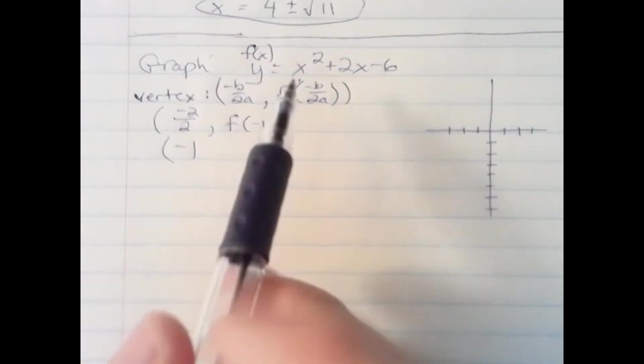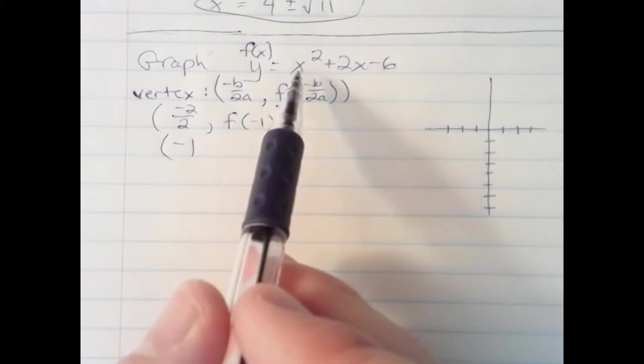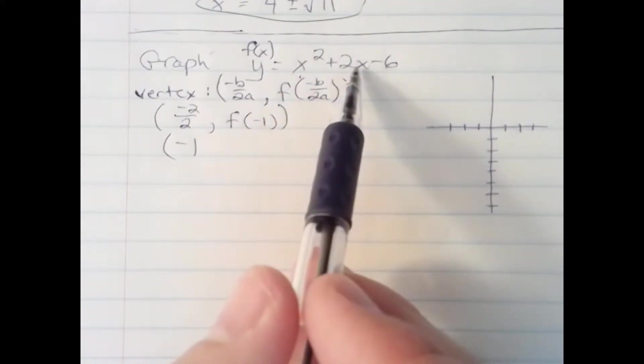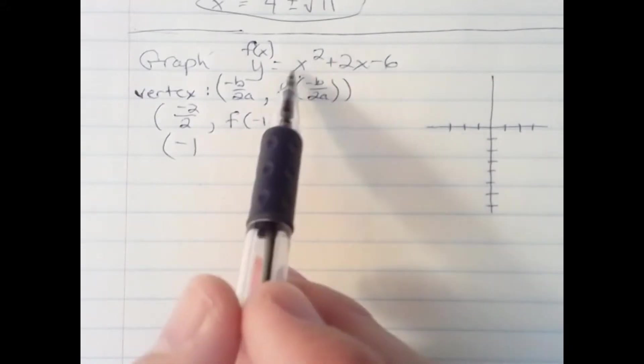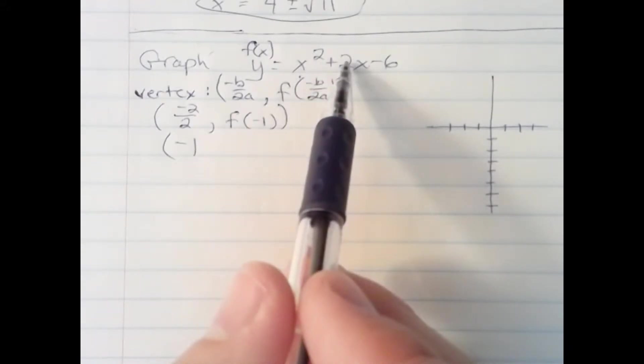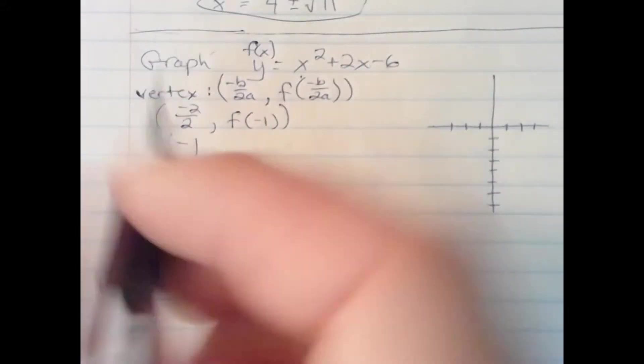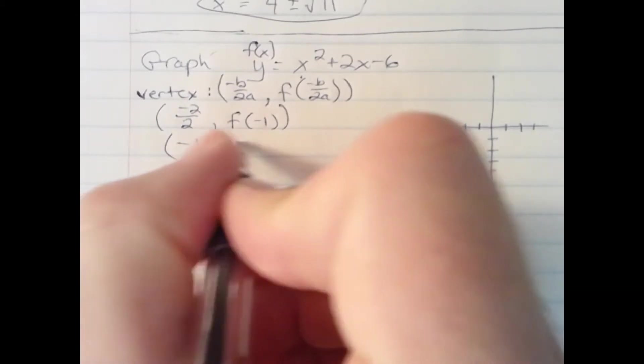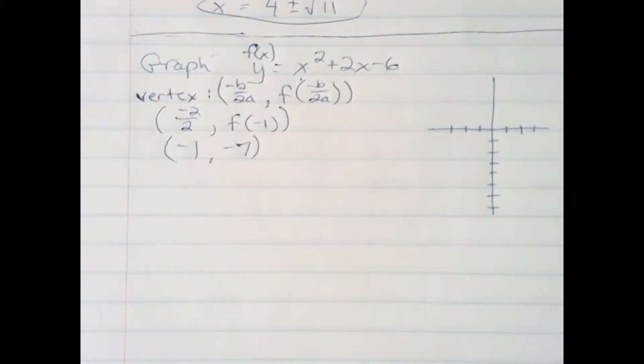If I put negative 1 in here, I get a 1. If I put a negative 1 in here, I get a negative 2. 1 minus 2, negative 1. Negative 1 minus the 6, negative 7. So there's my y-value of the vertex.